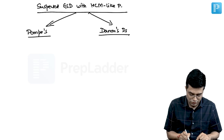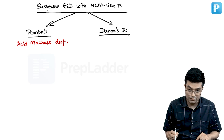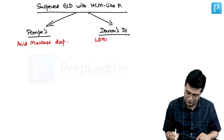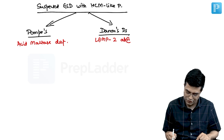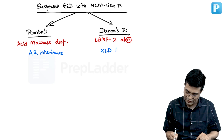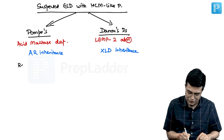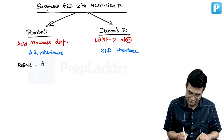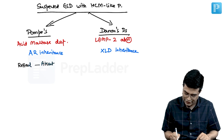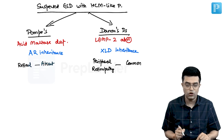Pompe disease is due to acid maltase deficiency, while Danon disease is due to LAMP2 mutations. Pompe disease shows autosomal recessive inheritance, whereas Danon disease shows X-linked dominant inheritance. Retinal features are absent in Pompe disease, but peripheral retinopathy is a relatively common feature in Danon disease.